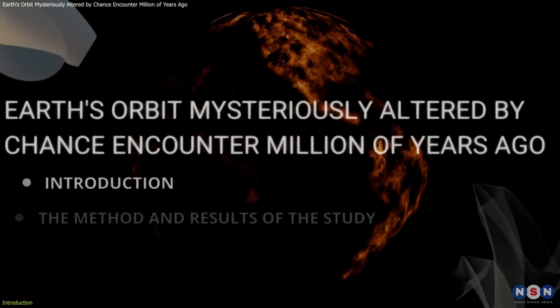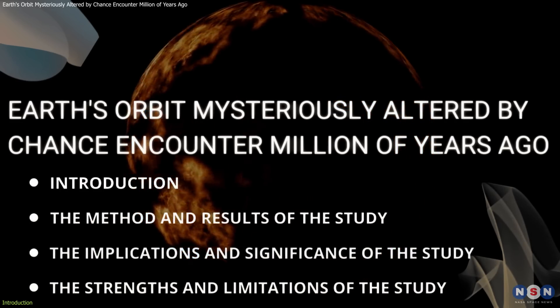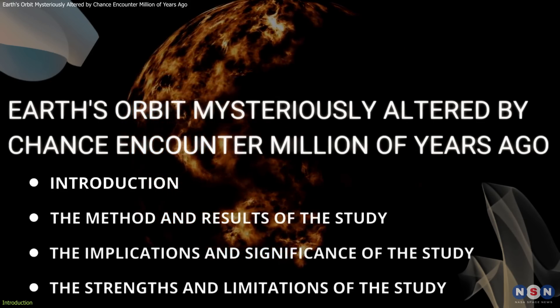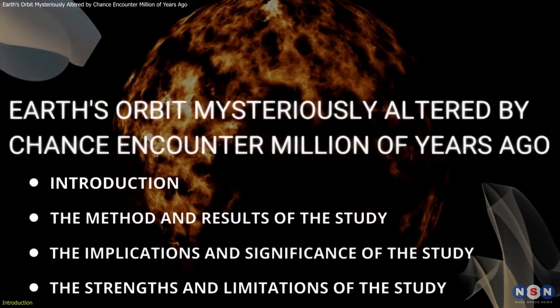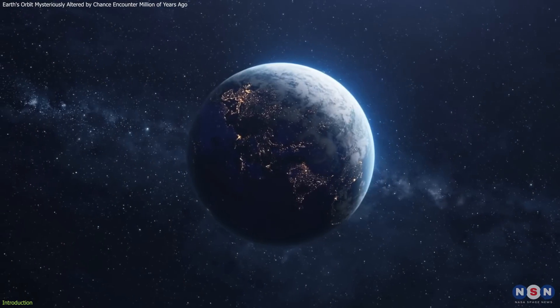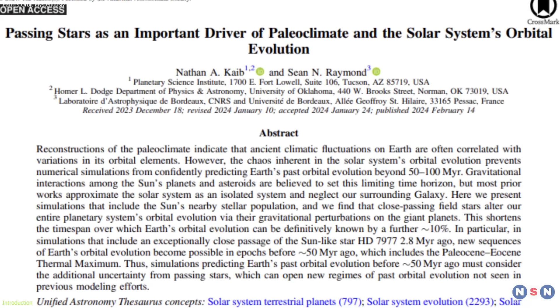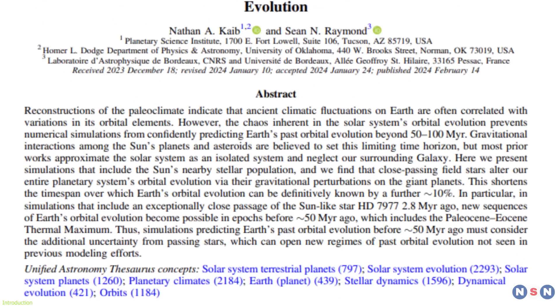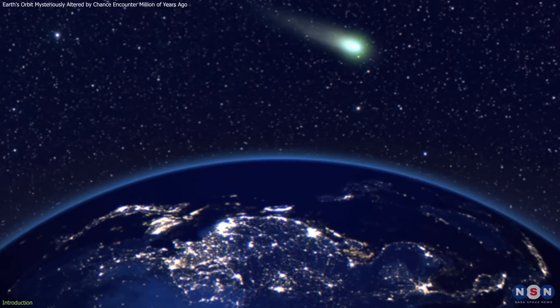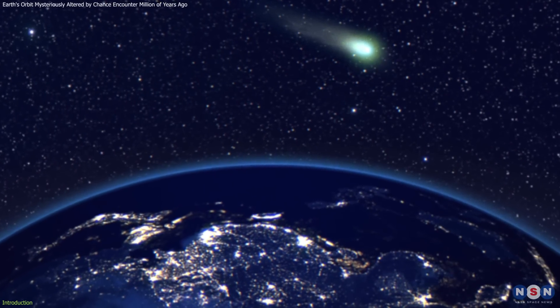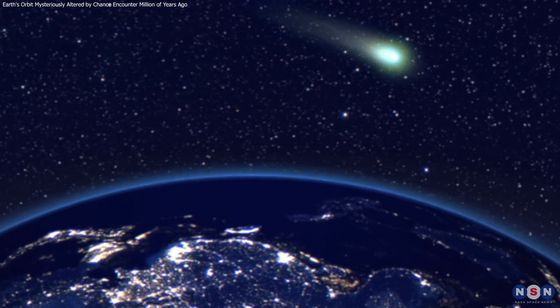In this video, we will explore this fascinating hypothesis and how the researchers used computer simulations to test it. We will also discuss the implications and significance of this study for understanding Earth's orbital history and its connection to climate change, and we will evaluate the strengths and limitations of this study and what it means for future research. So if you are curious about how a starry encounter could have altered Earth's orbit and climate, stay tuned and watch this video till the end.